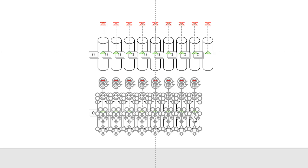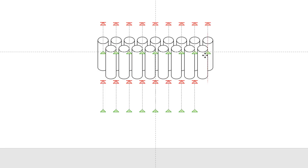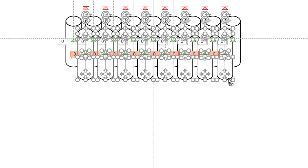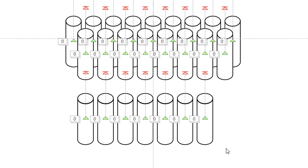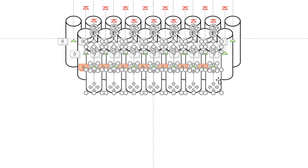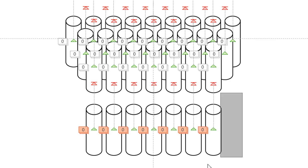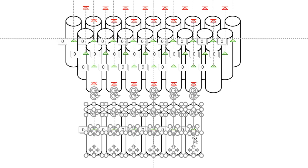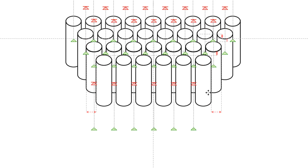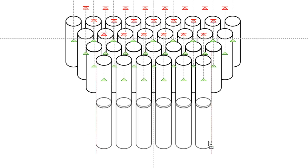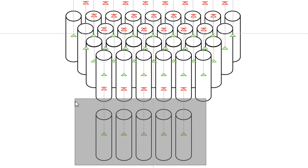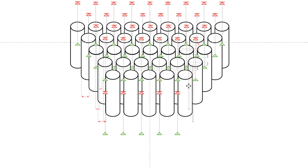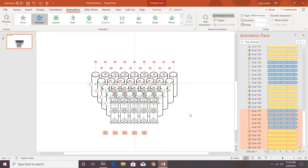Place all the duplicated objects in position. Make another duplicate of all eight objects, delete one, select the remaining seven, and arrange them. Duplicate again, delete the last one, select all and place them accordingly. Finally, create the last row at the bottom and place them. The bottom part is now ready.